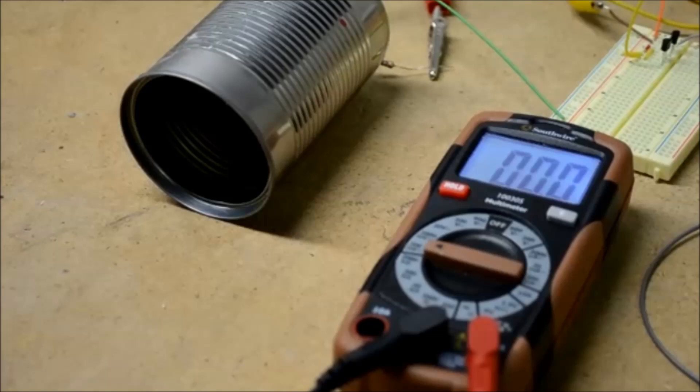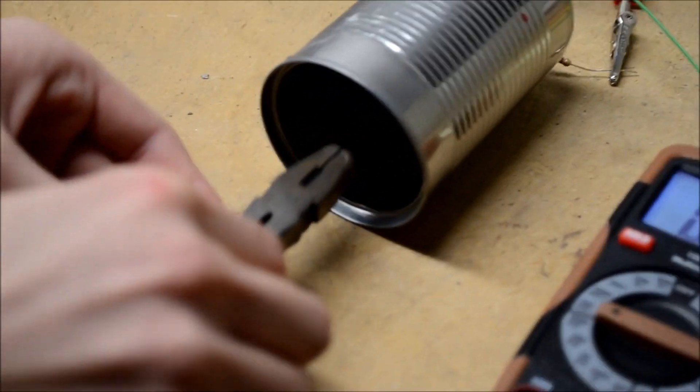As a control, if the pliers were to accidentally touch the anode, as seen here, the readings would spike up drastically.